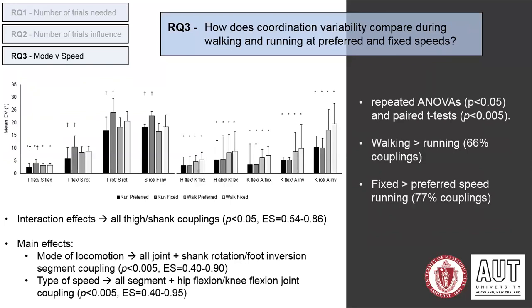Moving on to the third research question, we investigated the coordination variability differences across couplings when using 11 trials. Main effects were found across five to six couplings for mode of locomotion and type of speed, with walking tending to encompass greater coordination variability than running overall, and fixed speed running having greater coordination variability than preferred speed running. When speed is constrained and a participant is asked to move at a fixed speed, conscious control of limb positioning and velocity is required, which may be reflected in the increased coordination variability as the participant continually adjusts and varies mechanical solutions, presenting as increased coordination variability during fixed speed locomotion.